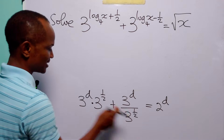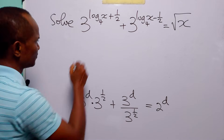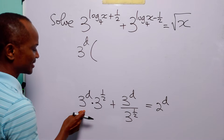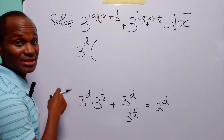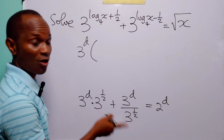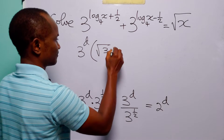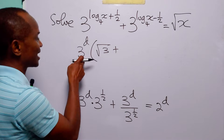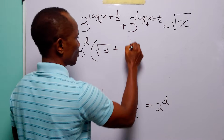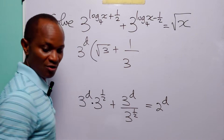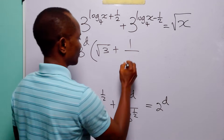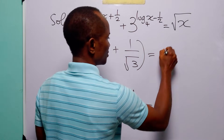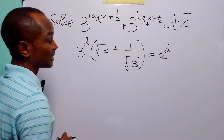Now we can factorize 3 to the power log base 4 of x. When we do that, we divide each term: 3 to the power half divided by 3 to the power d, and 3 to the power negative half divided by 3 to the power d, leaving us with 1 over 3 to the power half, which is equal to the square root of 3. And this is equal to 2 to the power d.